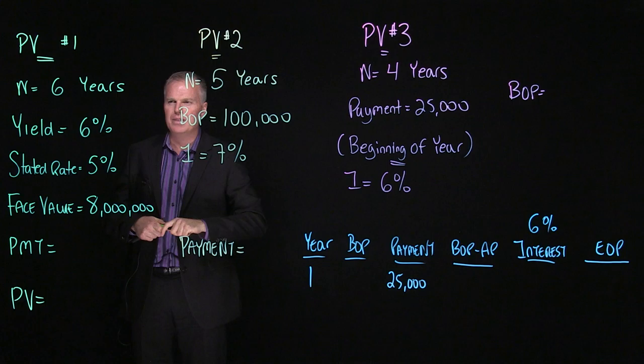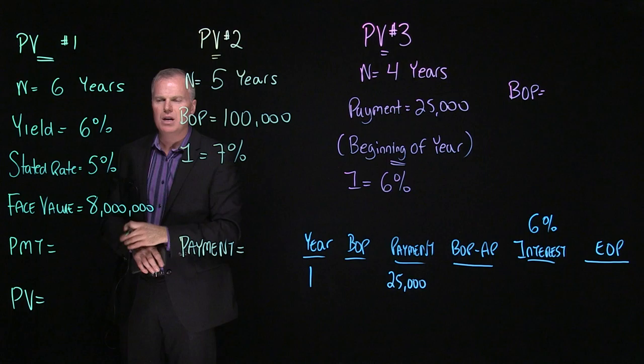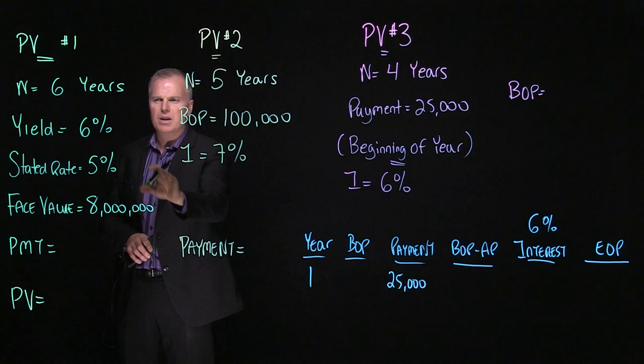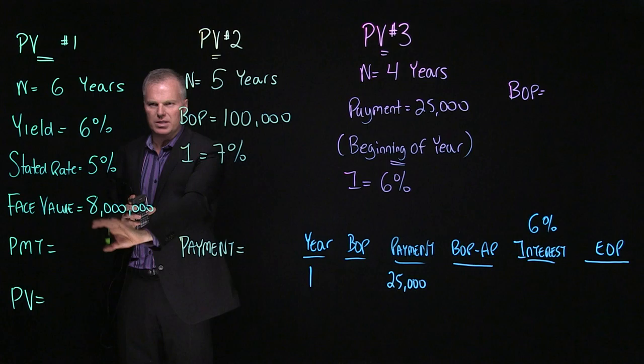Our first calculation—this is the information that we have and we need to understand the question before we work on our calculator. First, N is six years, our yield, our market rate is 6%, our stated rate is 5%, our face value of the bond is 8 million. Now what does all this mean? It means that the yield 6% market rate is what this bond is achieving in the market and this is the number we're going to use on our calculator when calculating our present value.